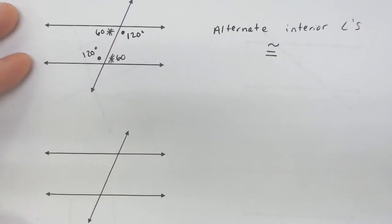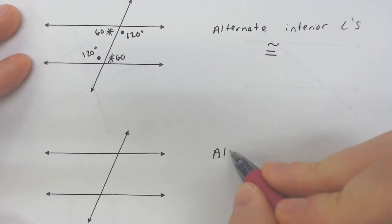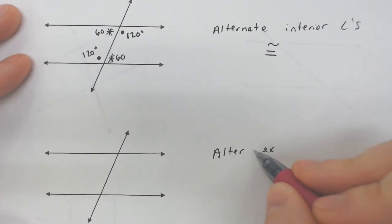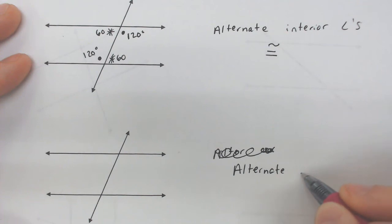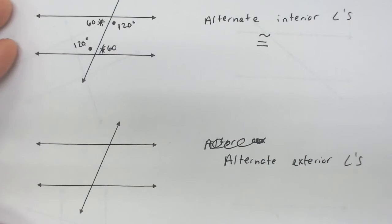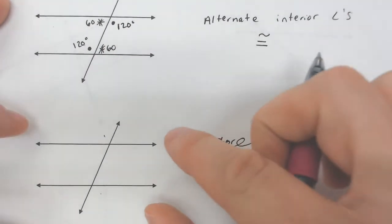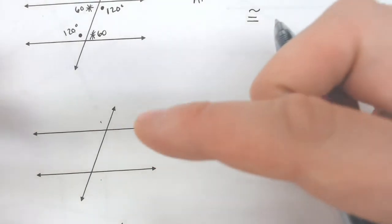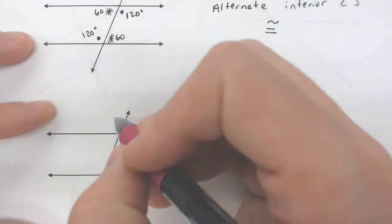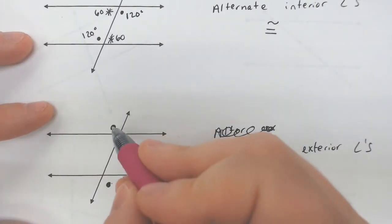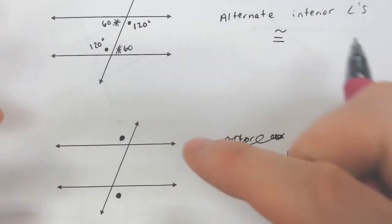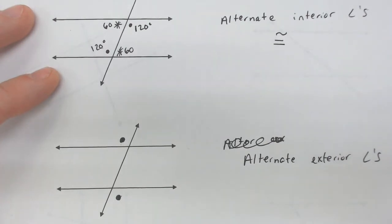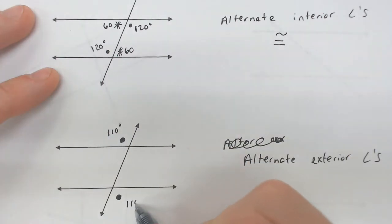The next one we're going to deal with is alternate exterior angles. Alternate exterior angles are exactly what they sound like — they are on opposite sides of the transversal but on the outside of the parallel sandwich. So one is on the left side of the transversal and one is on the right side, and both are on the outside. Let's say this was 110 degrees — this would have to be 110 degrees.